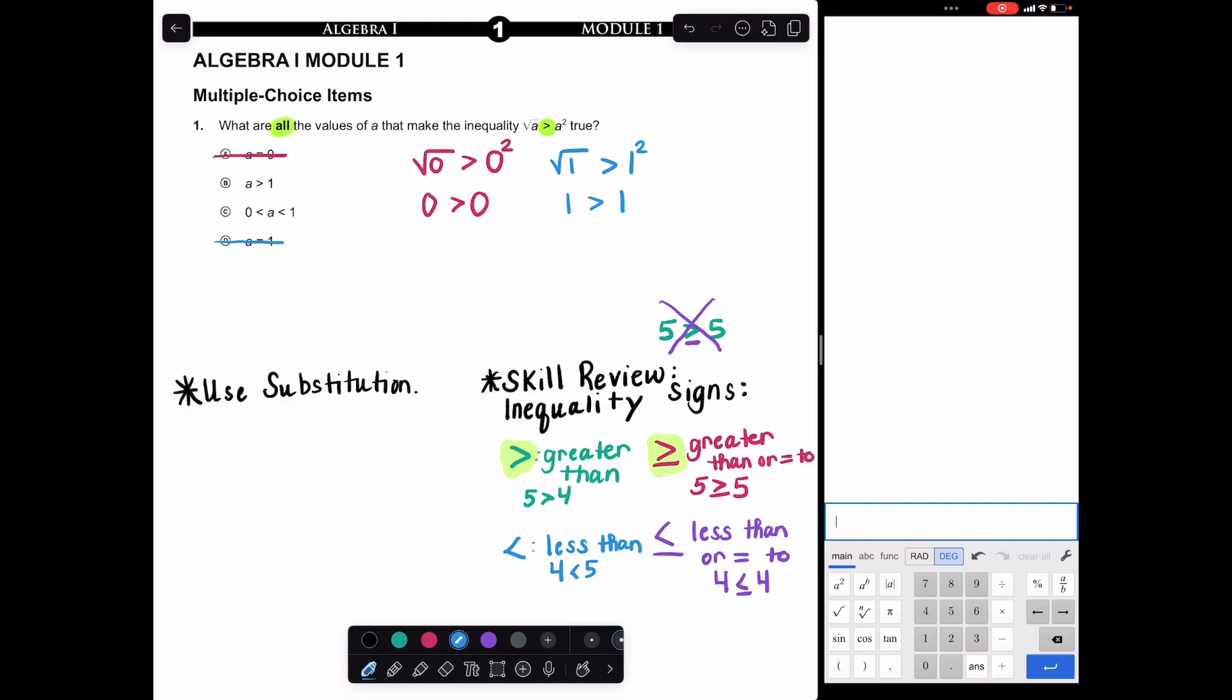You could think about what happens when I take a number greater than one and take the square root versus when I square it. Same for a number between zero and one, a decimal or fraction less than one, like 0.5 or 0.7. If I take a number greater than one, I'm going to work smarter. Because I'm dealing with a square root, I'll pick a perfect square like nine.